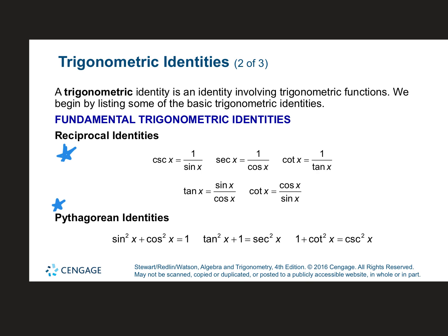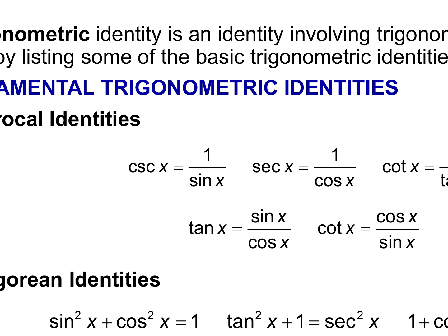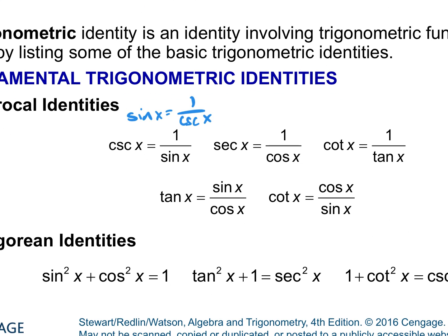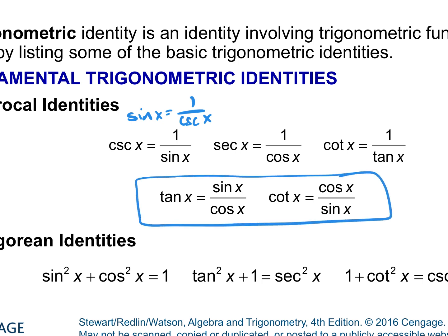Reciprocal identities — you guys already know this. Cosecant is the same as 1 over sine, and sine is the same as 1 over cosecant. Secant is the same as 1 over cosine, and cosine is the same as 1 over secant. Cotangent is the same as 1 over tangent, and tangent is the same as 1 over cotangent.